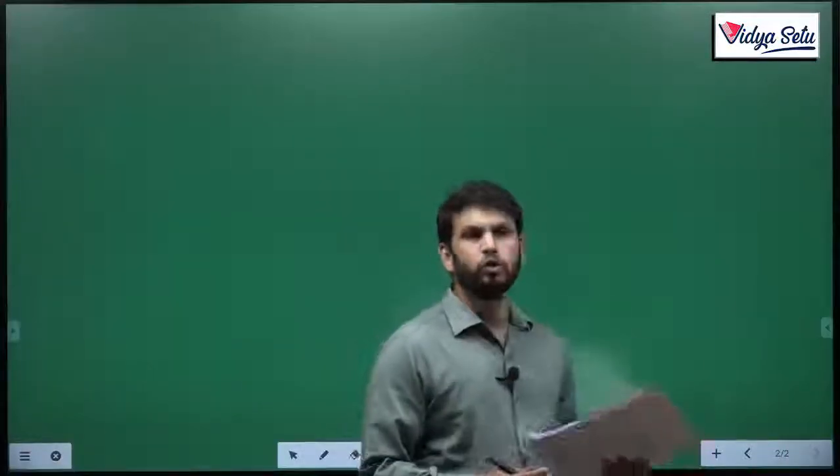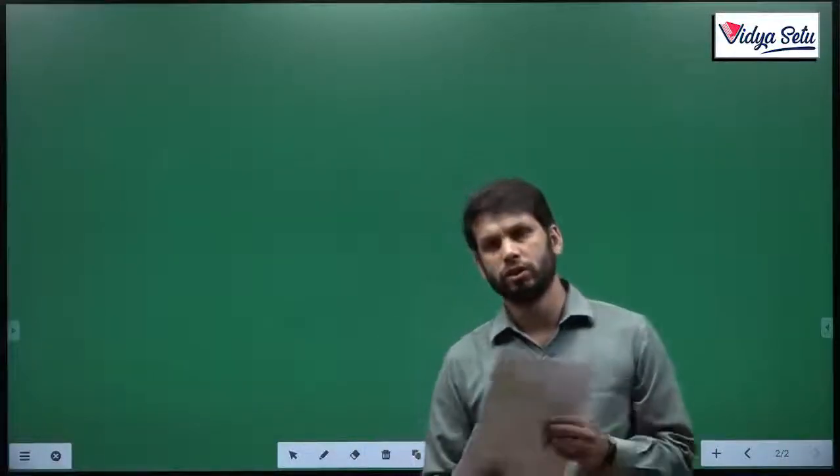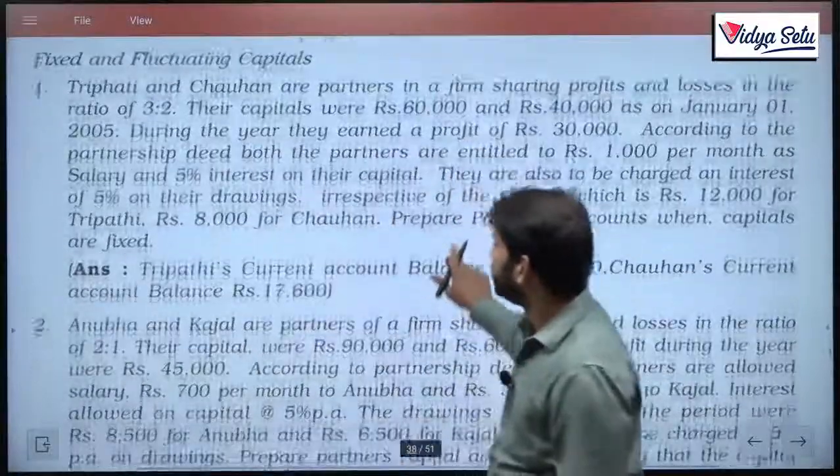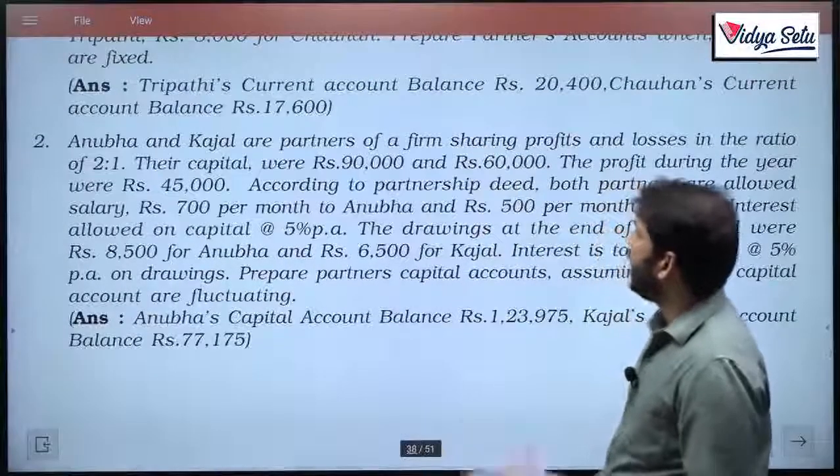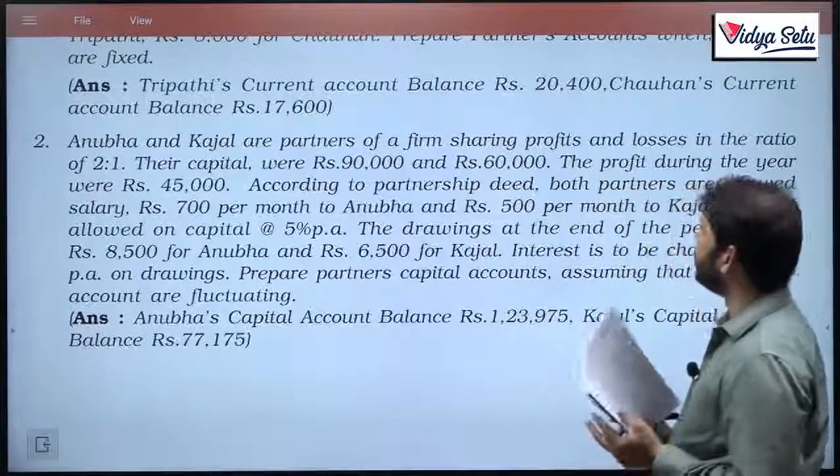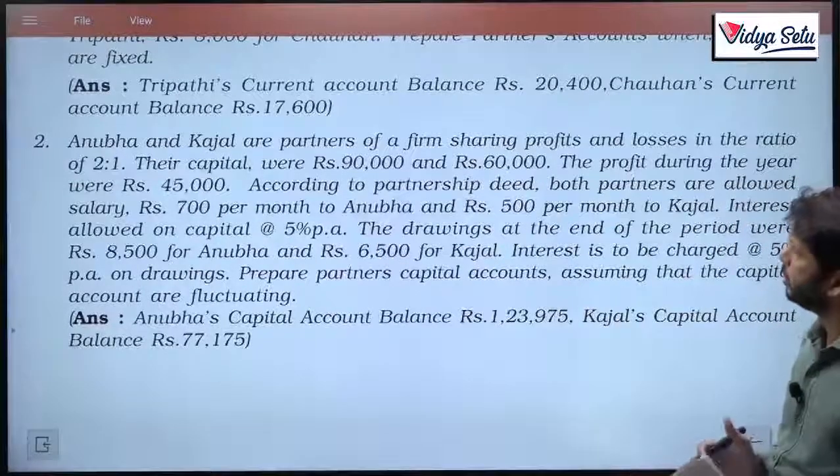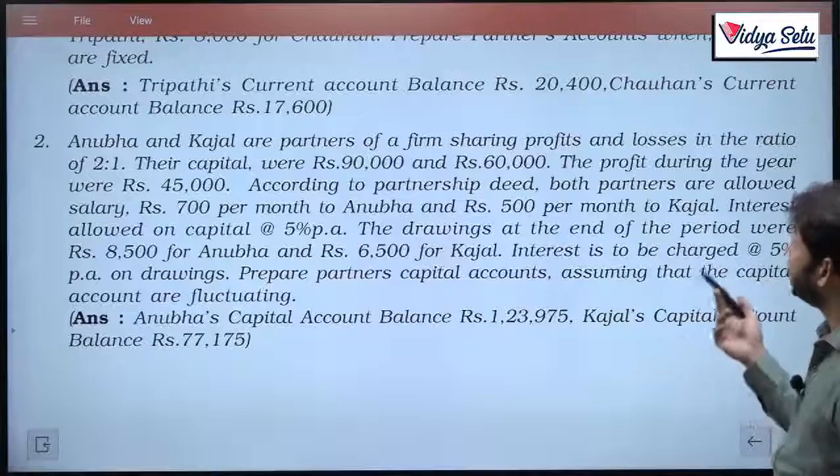Hello everyone, now we are going to do the second numerical question. Let us read the question first. The question is: Anubha and Kajal are partners of a firm sharing profits and losses in the ratio of 2 to 1.